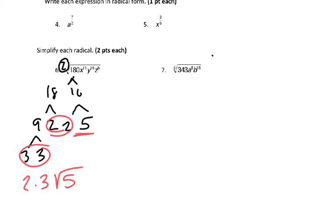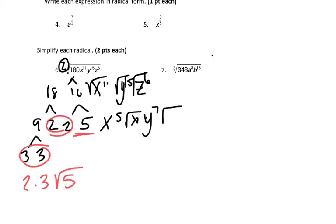Then we could break up our variables. That's x to the 11th, y to the 15th, and z to the 6th. And all you have to do is take your index and basically divide your exponent by that index. 2 goes in 11, 5 times. So we have x to the 5th outside and we've got 1 left over. 2 goes in a 15, 7 times we have y to the 7th with 1 left over. And then 2 goes in a 6, 3 times with none left over.